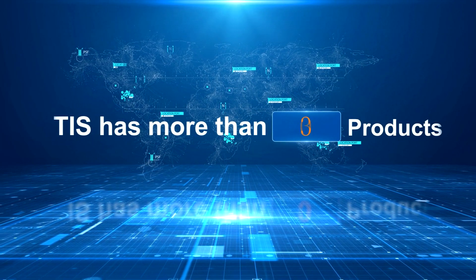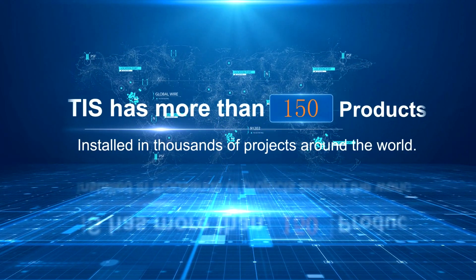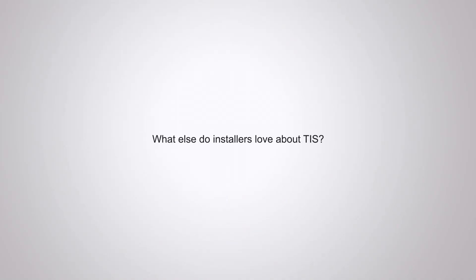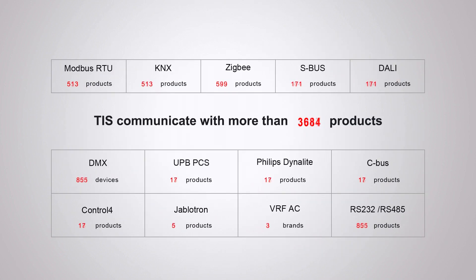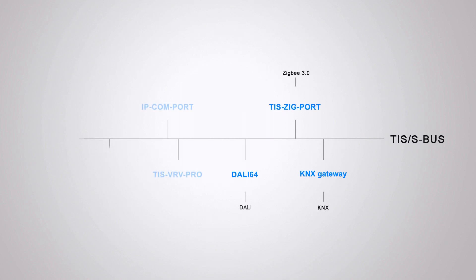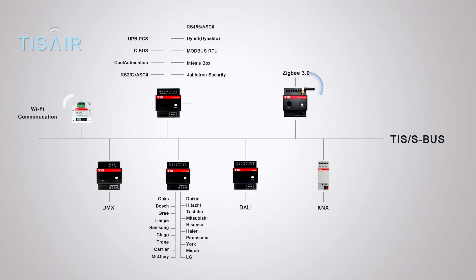TIS has more than 150 products installed in thousands of projects around the world. TIS is open protocol and communicates with more than 20,000 products from other manufacturers. TIS is easy to integrate with other systems through its very simple topology and integration process.